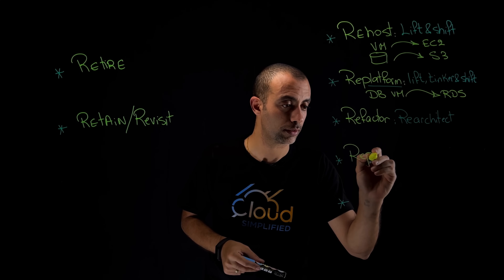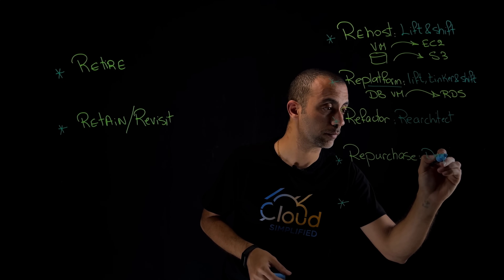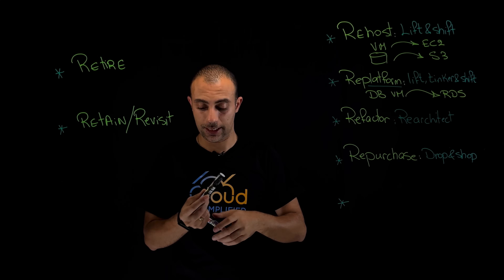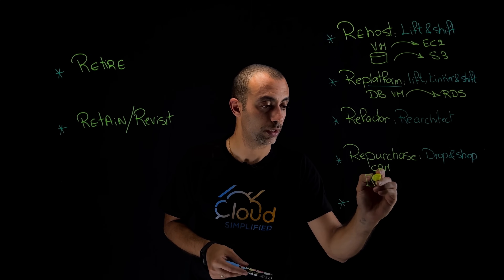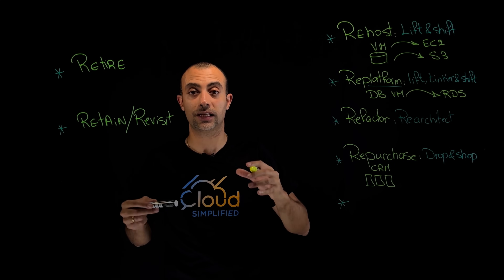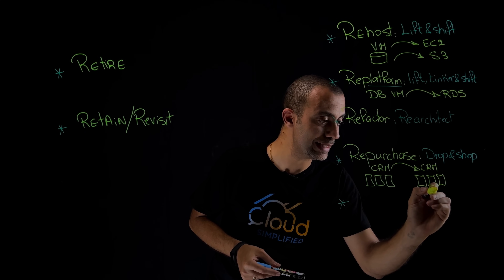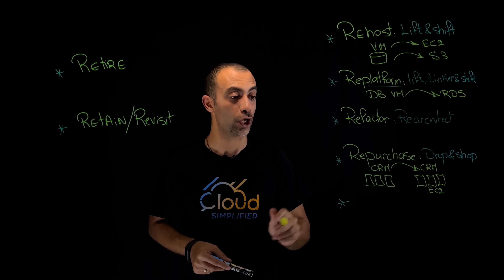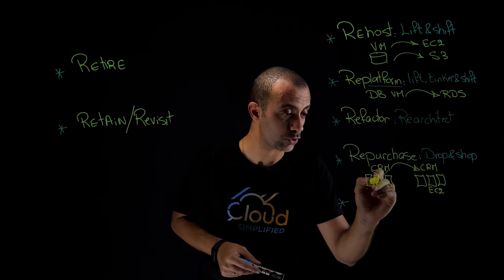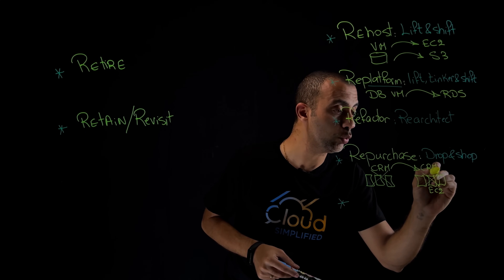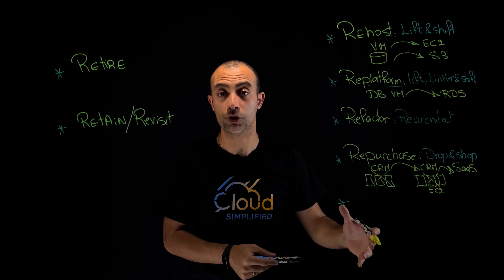The sixth migration strategy is what we call Re-purchase, also known as Drop and Shop. For example, let's say I have my CRM application running on-premise on virtual servers. If I migrated it to the cloud running on EC2 instances, that's exactly rehost. Re-purchase, on the other hand, means I don't want to handle any infrastructure — whether on-premise or on the cloud — so I would like to get it as software as a service. For something like CRM, I might go for Salesforce and get the CRM as a service.